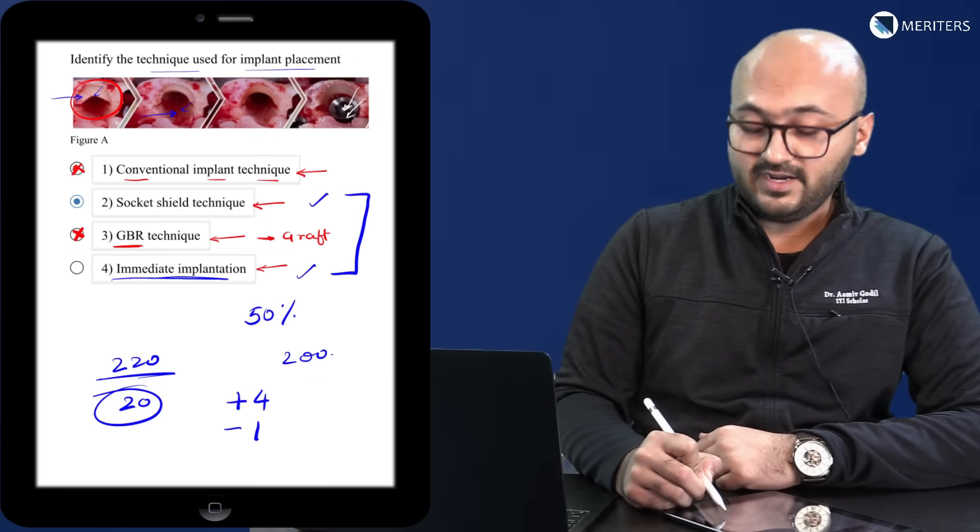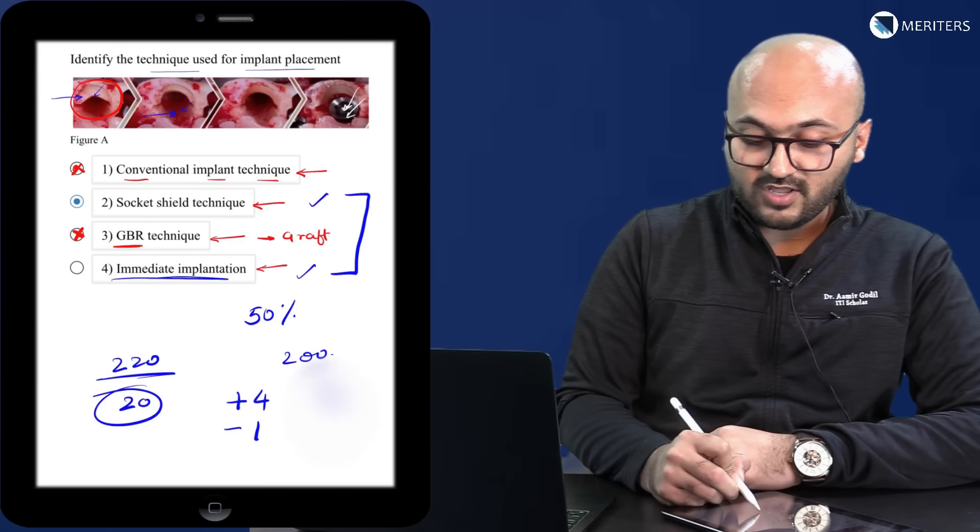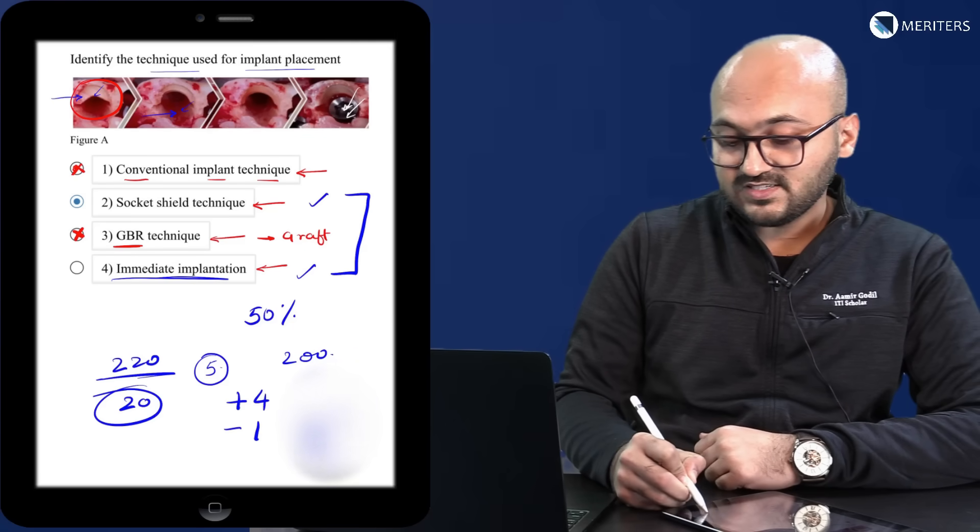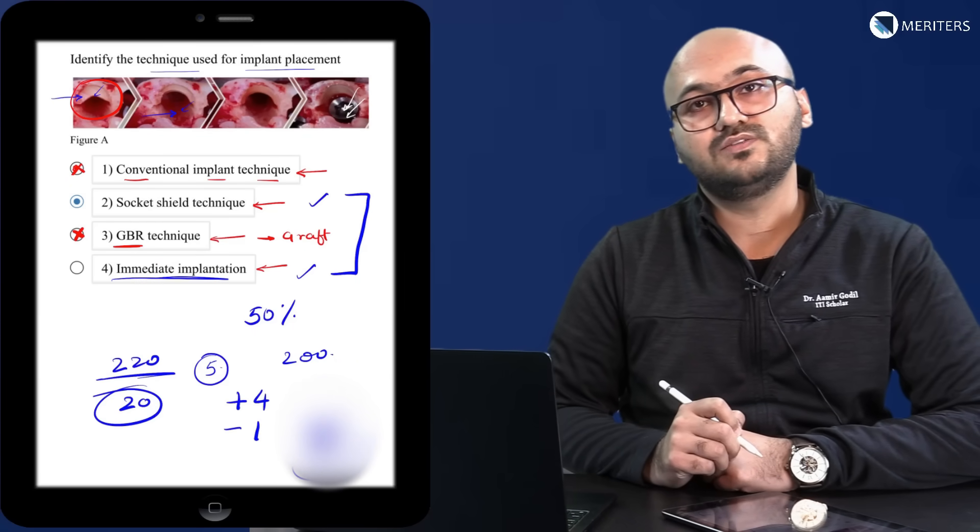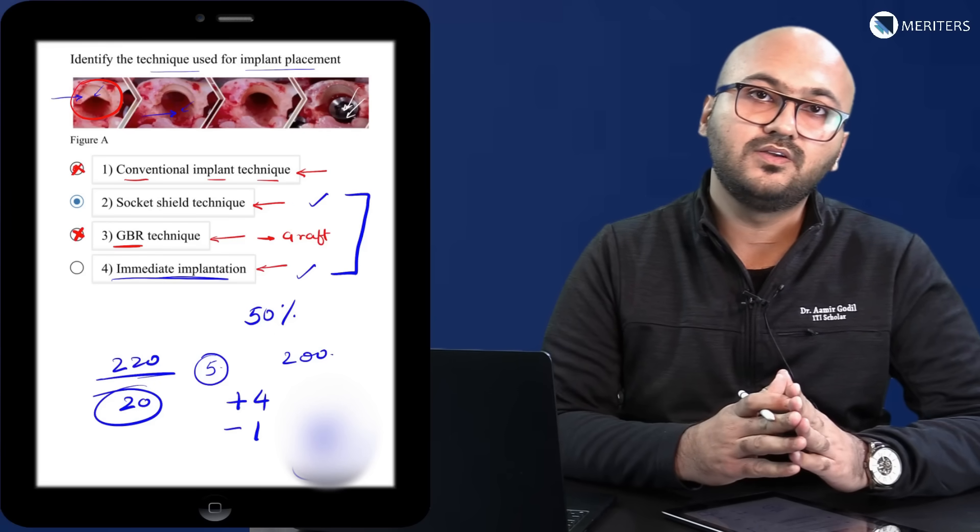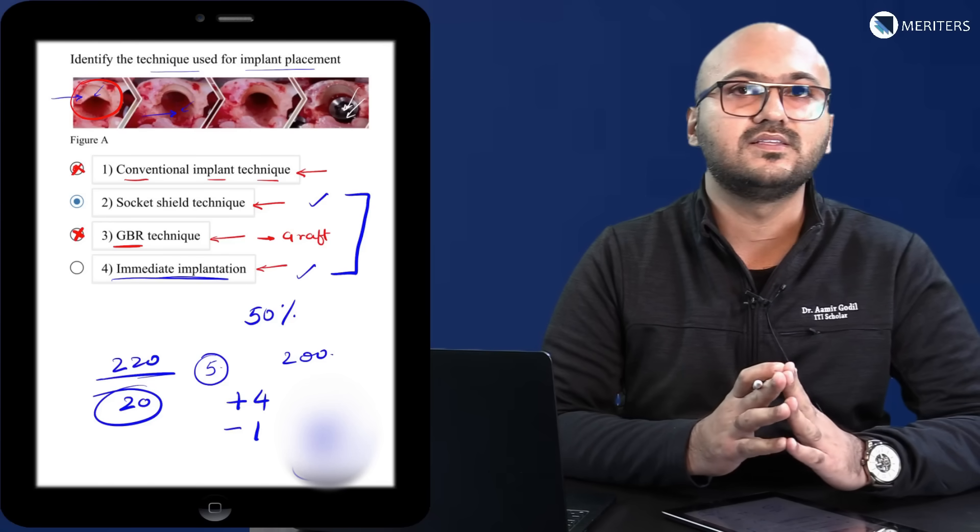For 2 correct you will get plus 8. So if you are attempting 5 questions you will have a total of plus 5 compared to plus 4. So I would definitely advise that you understand the math here and take the risk associated with smart guessing.